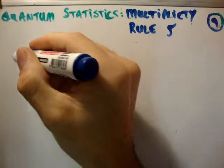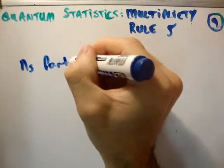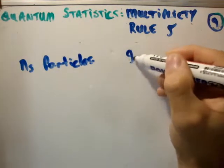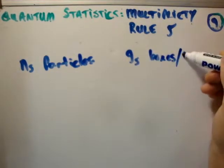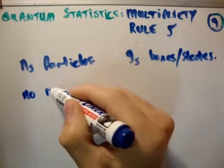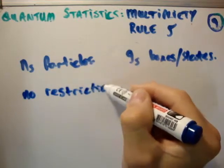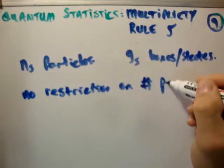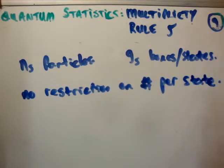So let's say we have n sub s particles and we want to put them into g sub s boxes or states, where there is no restriction on the number per state. If there's no restriction on the number per state, we know immediately that we're talking about either classical particles or bosons. If they're distinguishable, we're talking about classical particles. If they're indistinguishable, we're talking about bosons. In this case, I'm going to say we're talking about distinguishable particles.